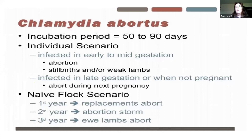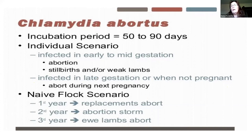The incubation period — the time between when an animal is actually infected and when they show clinical signs — is fairly long with chlamydia. If a ewe or doe is infected early in gestation, we generally will see abortion. But if infected mid to late gestation, oftentimes they will deliver either a stillborn or weak lamb. In some cases they deliver a normal lamb, but then the next pregnancy she will generally abort early on.